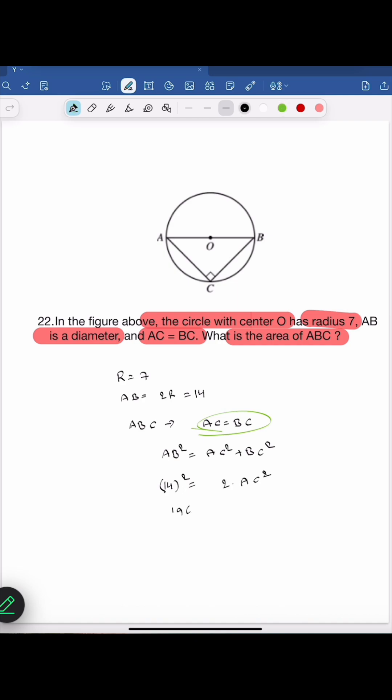14 square is 196. If you bring the 2 to the left hand side, it is 196 over 2 is equals to AC square. So AC square is equals to 98.